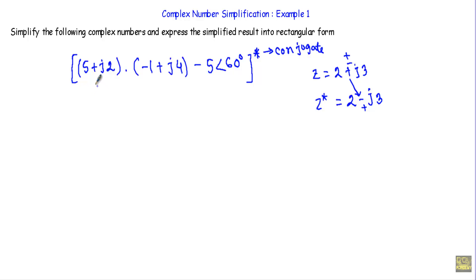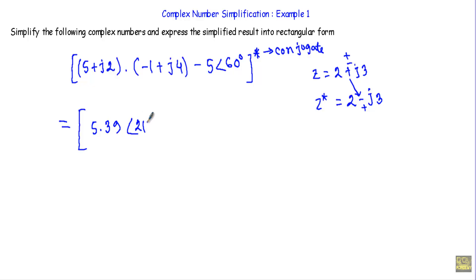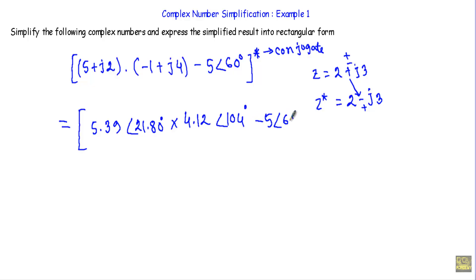So 5 plus J2 will be multiplied with minus 1 plus J4. When we multiply two complex numbers we use polar form, but they are given in rectangular form, so I will first convert them. 5 plus J2 converts to 5.39 phase angle 21.80 degrees, and minus 1 plus J4 converts to 4.12 phase angle 104 degrees.